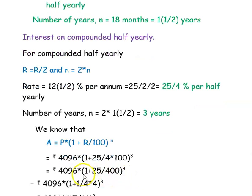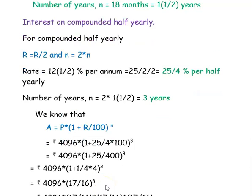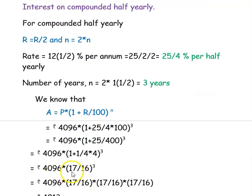After simplifying, we get 4096 × (1 + 25/400)^3. Now, 25/400 simplifies to 1/16, giving us (4 + 1)/... — more precisely, 4096 × (17/16)^3, which expands to 4096 × (17/16) × (17/16) × (17/16).